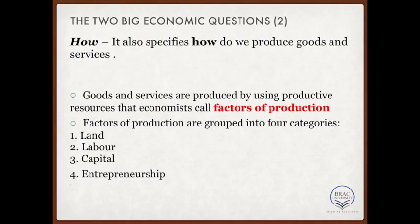And finally we have entrepreneur. If there is no entrepreneur, then who will organize together the land, the labor, and the capital in the first place? So we need the entrepreneur to come up with the ideas of what and how to produce, and make decisions and arrangements. So all this together — land, labor, capital, and entrepreneurship — makes the factors of production, in short, FOP.